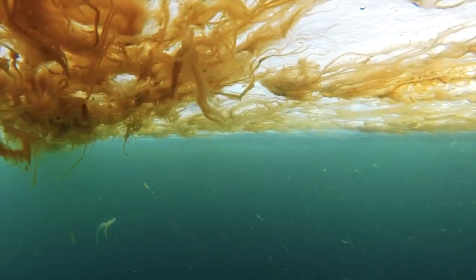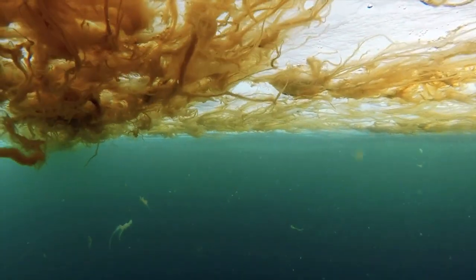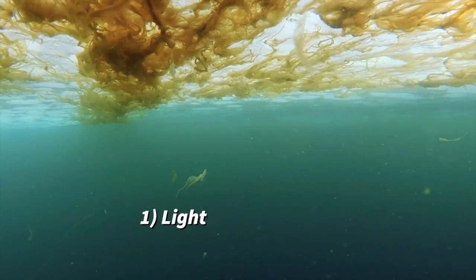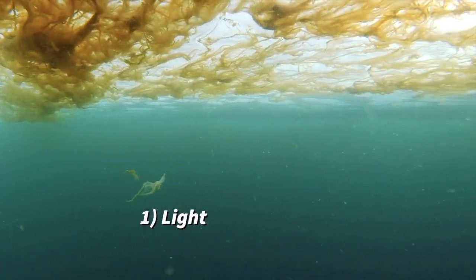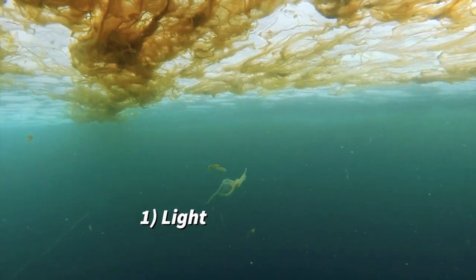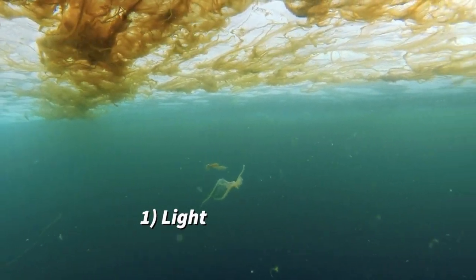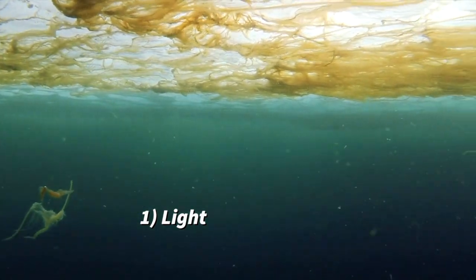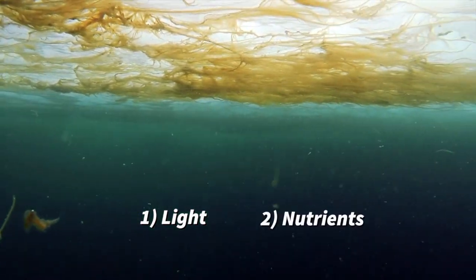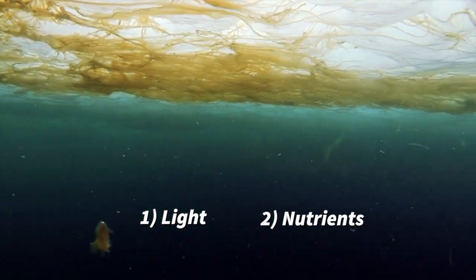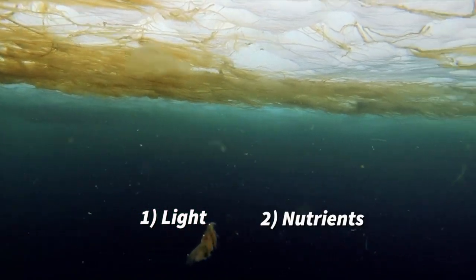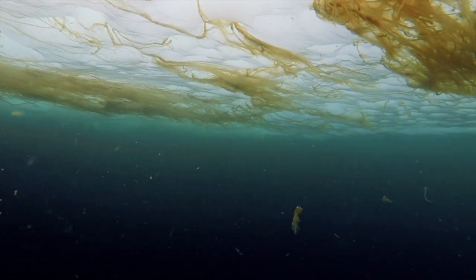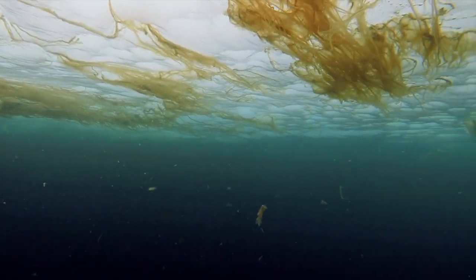Ice algae have two main requirements for growth. They need light from above for photosynthesis, which you can see there is enough of since it is not dark below the ice, and nutrients from the underlying water column. The bottom of the ice provides them with access to both of these once the sun returns.